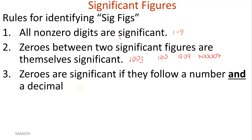Zeros are significant if they follow a number and a decimal point. For example, if I wrote 700 with no decimal, how many significant figures are there? Well, your decimal point, in case you didn't realize, is at the end when it's not written. So here I have just one significant number, because these zeros are placeholders. Same thing if I did 0.007 — these zeros are not significant, they're just placeholders. But if I did 7.0, this zero becomes significant — so I technically have two significant numbers. Why? Because these zeros follow a decimal point and a number — it has to be both, not just one or the other.